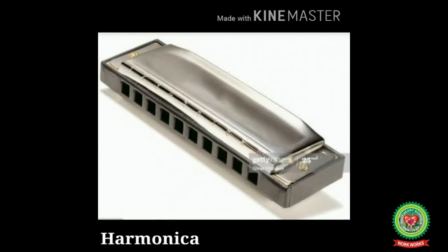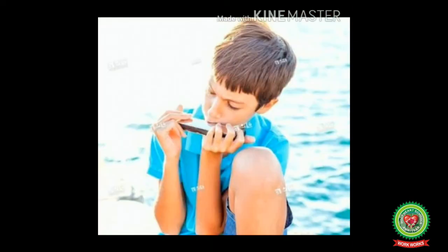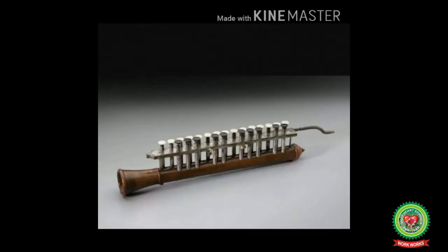Next one is harmonica. The harmonica was developed in Germany by a clockmaker named Matthias Horner. Also known as a mouth organ, it is a wind instrument. It is played by using the mouth to direct air into or out of one of the holes along a mouthpiece. Each hole contains a reed — an elongated spring made of brass which blocks and unblocks the airway to produce sound.